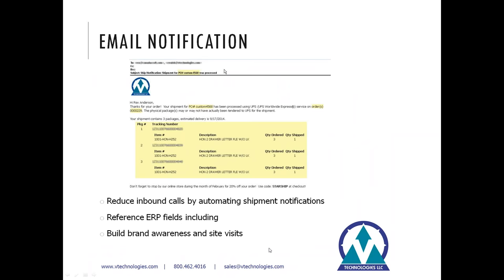For email notifications, you can set up branding with your own logo and color scheme however you want to format them. This will reduce the number of inbound calls you're receiving with shipment status inquiries. We can include reference fields from McCola such as the PO number, order ID, customer ID, or any information relevant to the customer. You can also build brand awareness by promoting other products, attaching catalogs, literature, and links back into your shopping cart and website. We'll show you that as part of the demo.